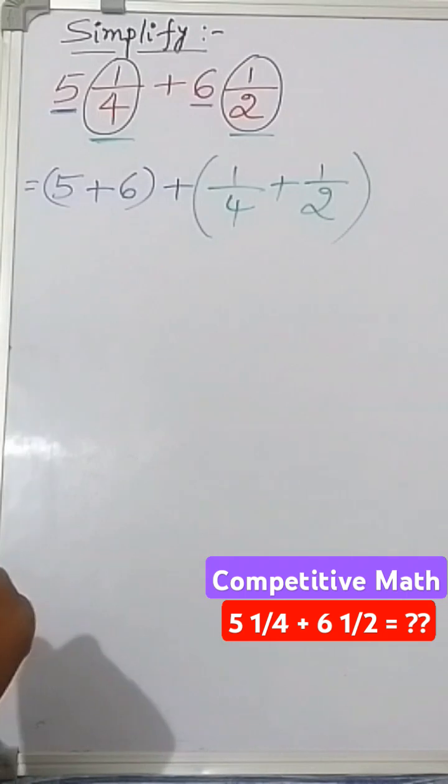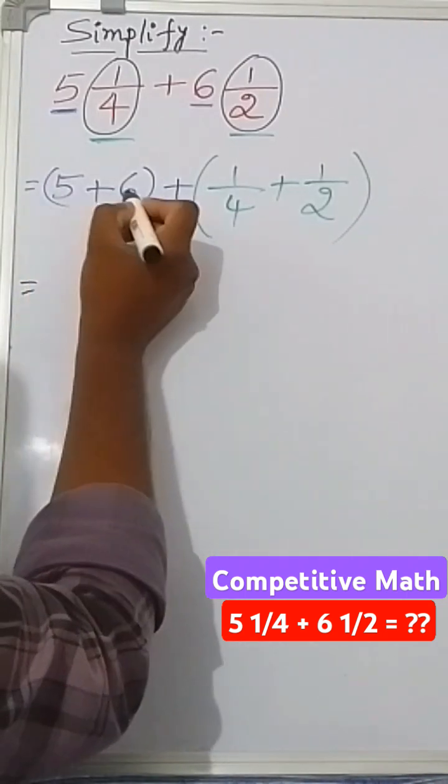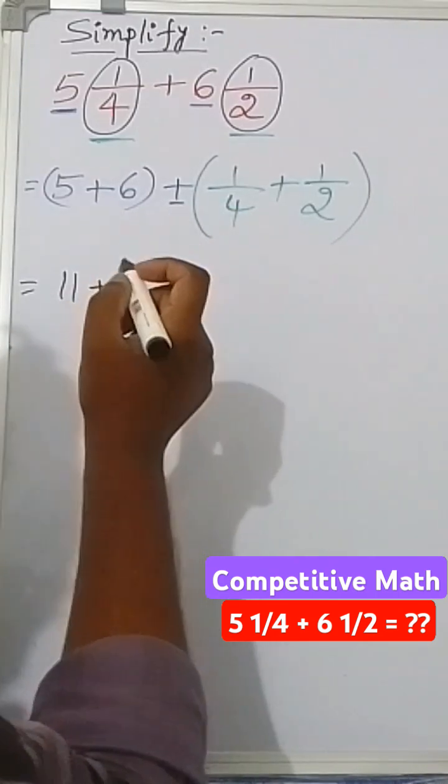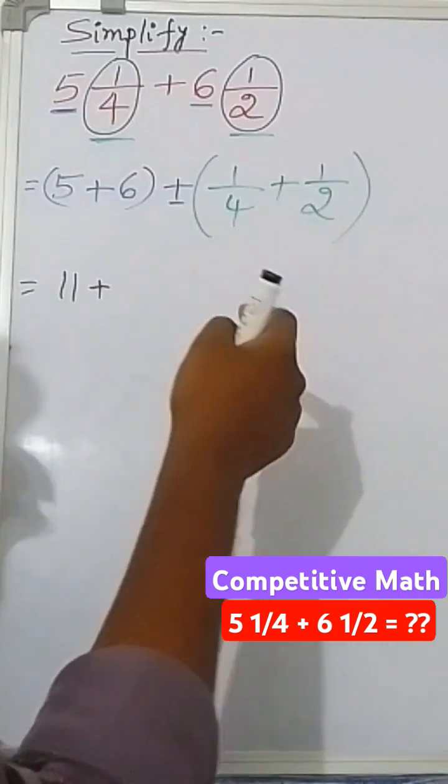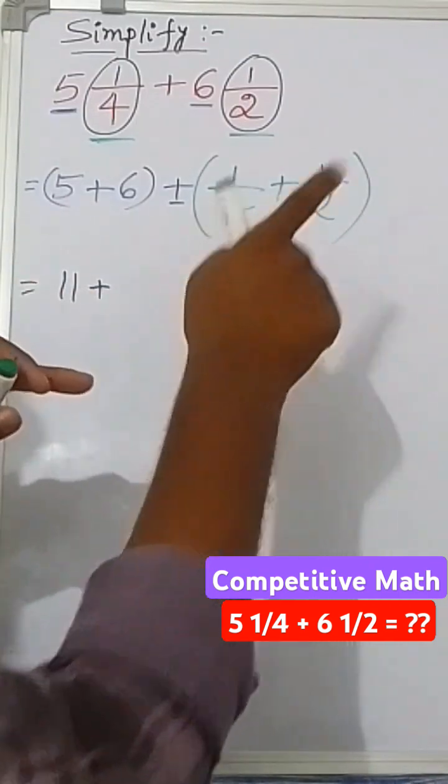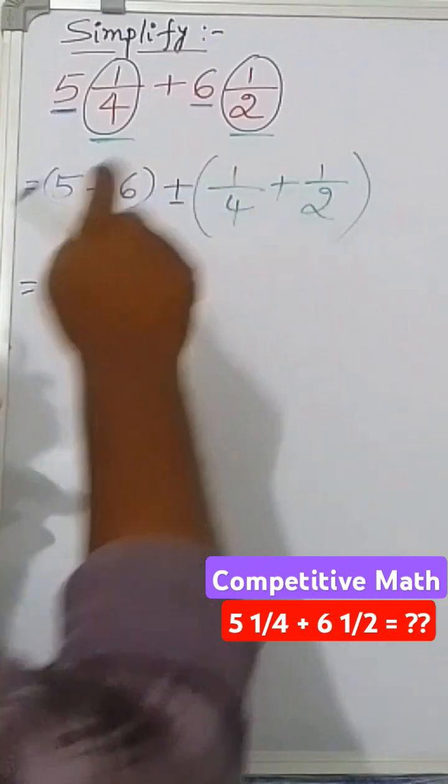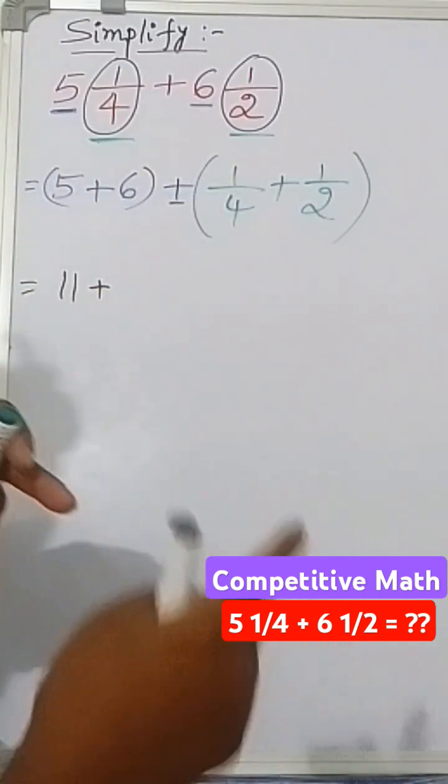Next, 5 plus 6 equals 11, and the plus stays as is. Now we need to add these two fractions. To add fractions, the denominators should be the same. Here we have 4 and 2. If denominators are the same, we can add easily. First, we have to make the same denominator.